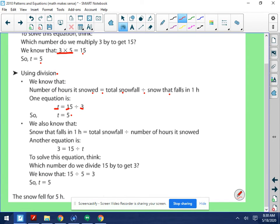Last one. We also know that snow that falls in one hour, which is 3 centimeters, equals the total snowfall, 15 centimeters, divided by the number of hours it snowed, which is T. So another equation is 3 equals 15 divided by T. To solve this equation, we think, which number do we divide 15 by to get 3? 15 divided by what is 3? 15 divided by 5. So in all of these questions, it's going to point to T equaling 5. It's snowfall for 5 hours.